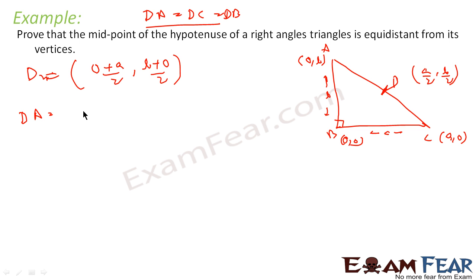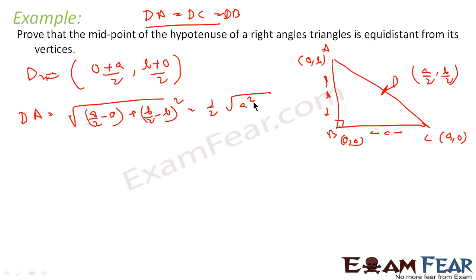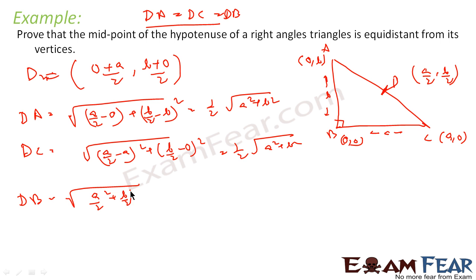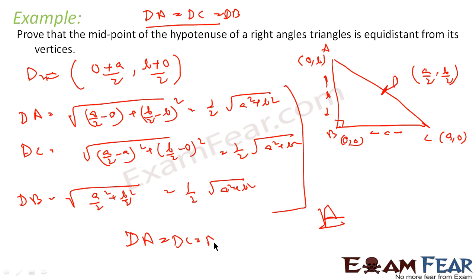Now let us find the distances. DA = √((a/2 - 0)² + (b/2 - b)²) = ½√(a² + b²). DC = √((a/2 - a)² + (b/2 - 0)²) = ½√(a² + b²). DB = √((a/2)² + (b/2)²) = ½√(a² + b²). Since all three values are equal, DA = DB = DC, and point D is equidistant from A, B, and C.